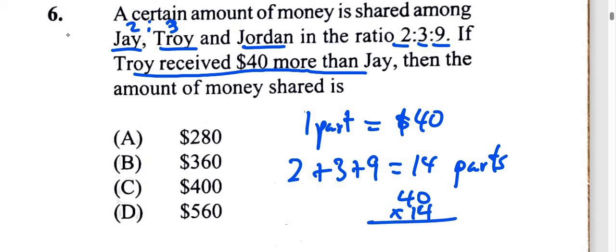So we have 4 times 0 is 0, 4 times 4 is 16. That's 160. Let's write it here. And 1 times 0 is 0.